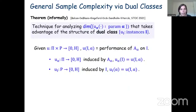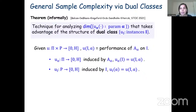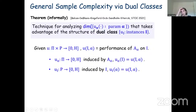The major result I want to talk about today, from a paper with several collaborators, gives a very general technique for analyzing the pseudo-dimension of the family of functions we care about in algorithm design: the utility functions u_α as a function of possible input instances. This technique exploits the structure of the dual class of functions to provide the pseudo-dimension of the primal class of utility functions given by our parametric algorithms.